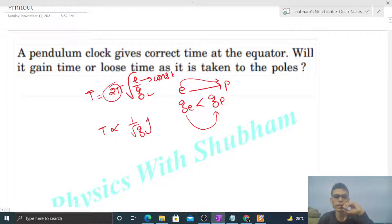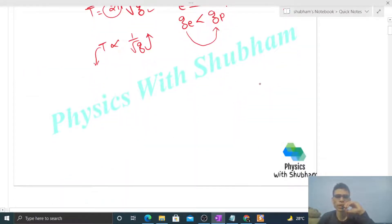And time period is inversely proportional to root of g, it means if g increases then time period decreases. So you can feel it this way: for our clock at the equator, let's say one oscillation of this pendulum completes in two seconds. Then if we go to the poles, time period will decrease, it means for one oscillation it will take lesser than two seconds, maybe one second to complete one oscillation.